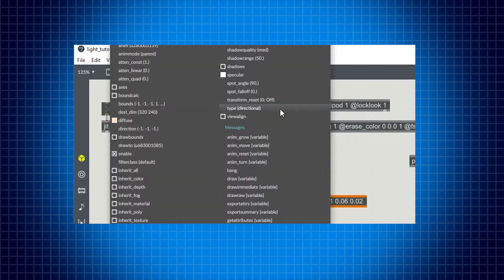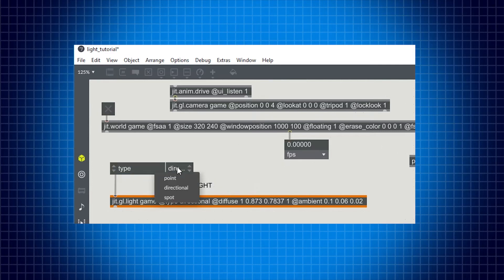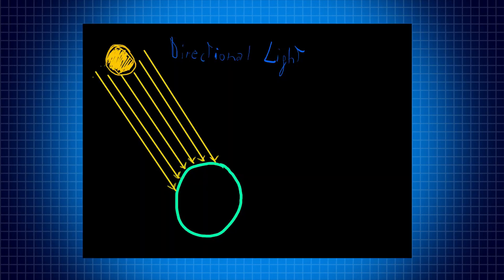First of all, let's see which type of lights we have inside Max and in general inside OpenGL. The first type is the directional light, where all the rays are considered to be parallel because the light source is considered to be infinitely far from our geometry — for example, like the Sun or the Moon, something so far that we consider all the light rays to have the same direction.